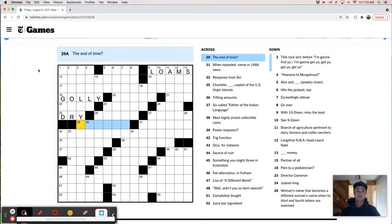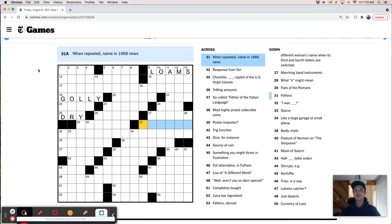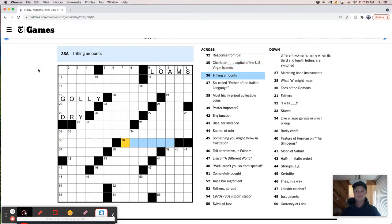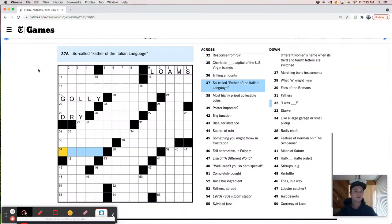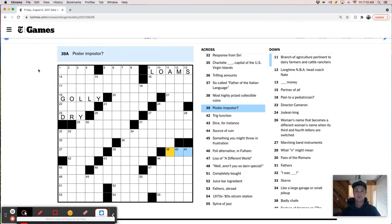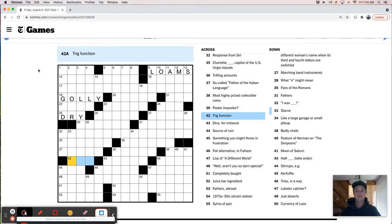End of time. Like, the last issue, last page. When repeated, x. Trifling amounts. Father of the Italian language. Highly prized collectible coins. I'll say, like, a pirate doubloon. Poster imposter. This is much harder than I was hoping for today. Dice, for instance. Cubes.